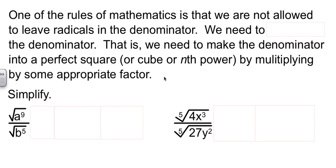Now there's a rule in math that says you can't leave radicals in the denominator. So you have to do what's called rationalizing the denominator. You need to make your denominator into a perfect square or perfect cube or perfect fourth or whatever you're working with to be able to clean it up. And what we're going to do is multiply by some appropriate factor that we have to figure out for each problem.